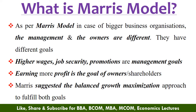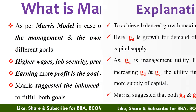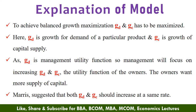a balanced growth maximization approach should be followed by the business organization. We will discuss this model in detail. According to this model, in order to achieve the balanced growth maximization, GD and GC has to be maximized. Here, GD is the growth of demand for a particular product of a firm and GC is the growth of capital supply. As GD is the management function, so the management will focus on increasing GD. If the demand of the product is increasing,